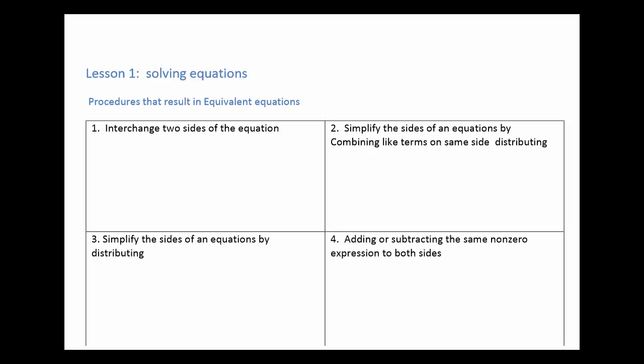The first rule is that we can interchange two sides of an equation. So, let's say I've got something really simple like x equals 3. Well, switching sides — 3 equals x — does not necessarily do anything. It's still a true statement.